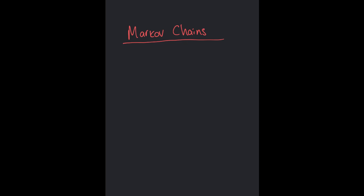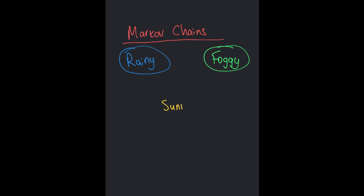In less than 10 minutes I'm going to tell you why you care about a Markov chain and 99% of the important information about them. They're useful for predicting events. In this example we're actually going to predict the daily weather. We're going to have three different states — three different possible weather states: it could be rainy today, foggy today, or sunny today.